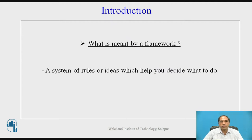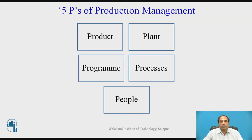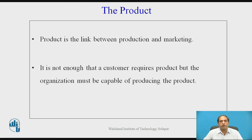To achieve these functions, we need to consider concepts before going into the details of all production activities — these are called the five P's of production management. The first is product, then plant, then program, then process, and people. What is a product? Product is the link between production and marketing. It is not enough that a customer requires a product; the organization must be capable of producing it.